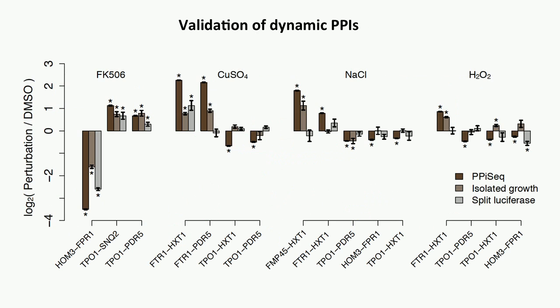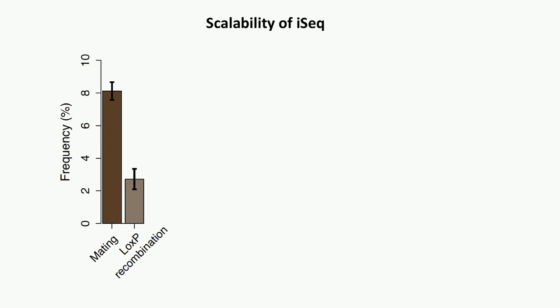We did validation for those dynamic protein interactions using two independent methods, and most protein-protein interactions were validated in one of the experiments. Next, we wanted to test the scalability of our platform. The limiting step for constructing this library is the mating efficiency and the LoxP recombination efficiency. We measured those two parameters, and based on them we estimate that for one mating plate we can generate 10^9 double barcodes. If we do 100 mating plates, we will generate 10^11 double barcodes, which can easily cover even the human protein interactome.